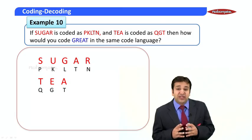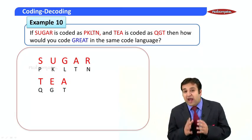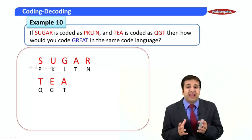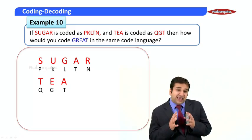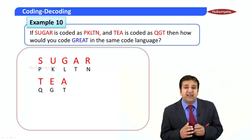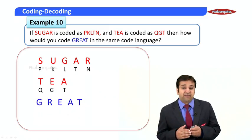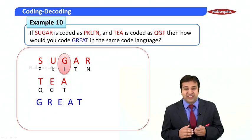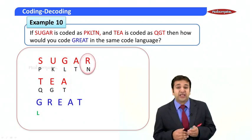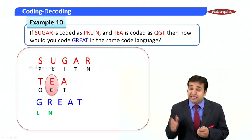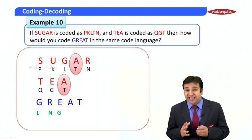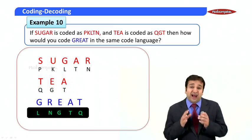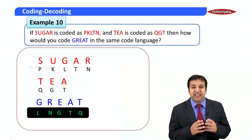Let's see if our assumption is true. 'At' is coded as 'qgt'. As you can see, there is just one alphabet common in the code, and that is 't', which is the code for the alphabet 'a'. So it is clearly a case of direct coding. Now for 'great': g is l, r is n, e is g, a is t — confirmed in both words — and t is q. So the answer for 'great' is l-n-g-t-q.